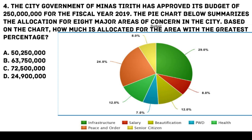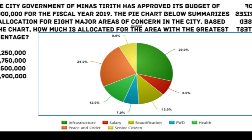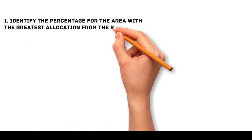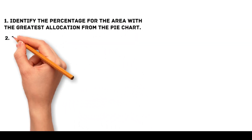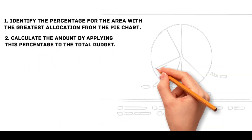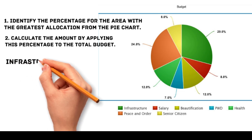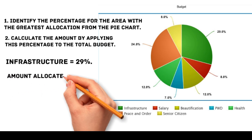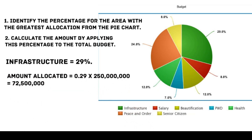To find the amount allocated for the area with the greatest percentage, we identify the percentage from the pie chart and apply it to the total budget. The greatest percentage allocation is for infrastructure at 29%. Amount allocated = 0.29 × 250 million = 72,500,000. Therefore, the amount allocated for the area with the greatest percentage is 72,500,000 pesos. The correct answer is C.